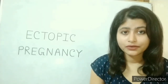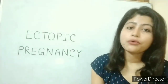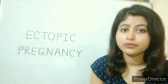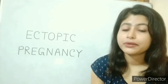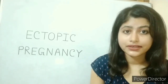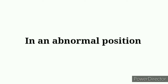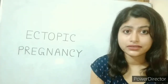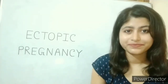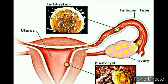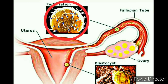Ectopic pregnancy — what's that? The word 'ectopic' means in an abnormal position or in an abnormal place. Ectopic pregnancy is the pregnancy that occurs when a fetus develops and continues to grow in an abnormal position or in an abnormal place inside the female body.